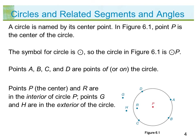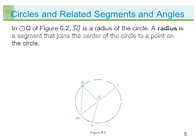Points P (the center) and R are in the interior of circle P. Points G and H are in the exterior of the circle.